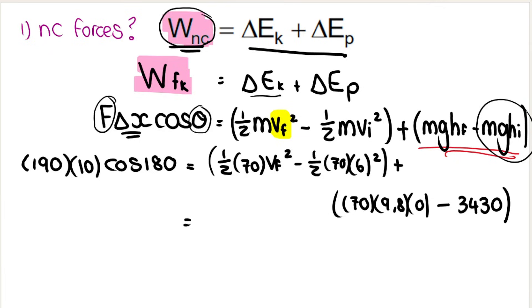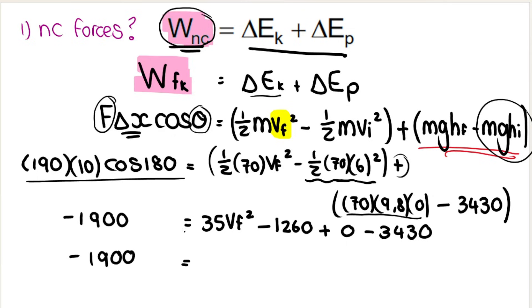Now all we need to do is the maths. And sometimes learners struggle with this. So I'm just going to show you step by step how I do it. So I work out this. Then over here, I say half of 70 is 35. So 35 VF squared minus, I work out all of this. Gets me 1, 2, 6, 0. Then plus, here's a plus. Then this is going to end up being 0 minus 3, 4, 3, 0. So I'm going to simplify the left-hand side. I've got the left-hand side is simplified. Let's simplify the right-hand side. So like terms.